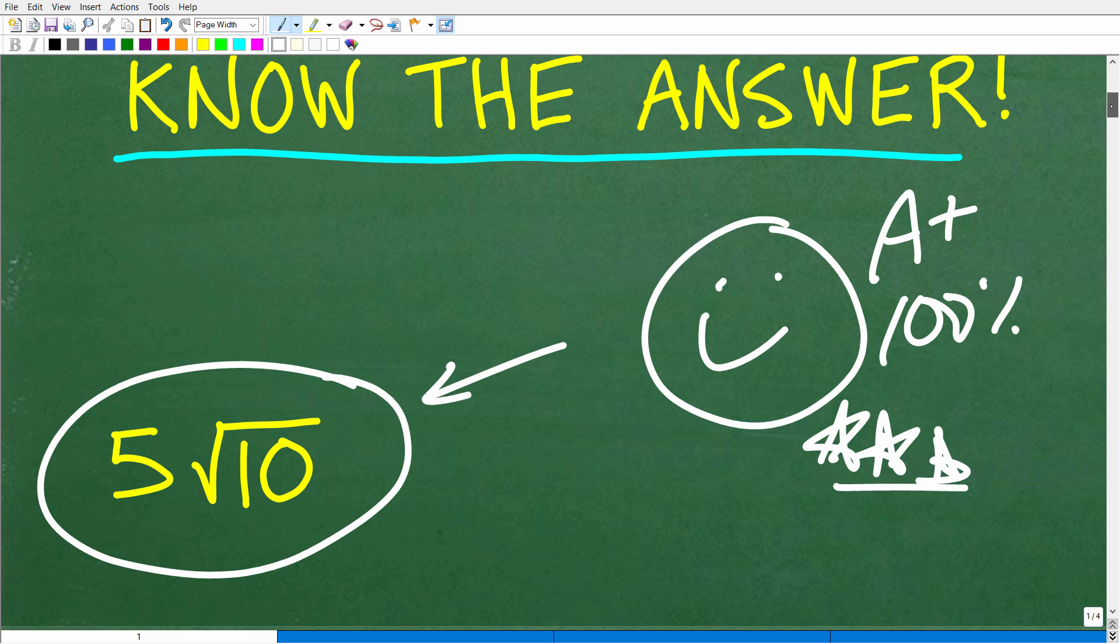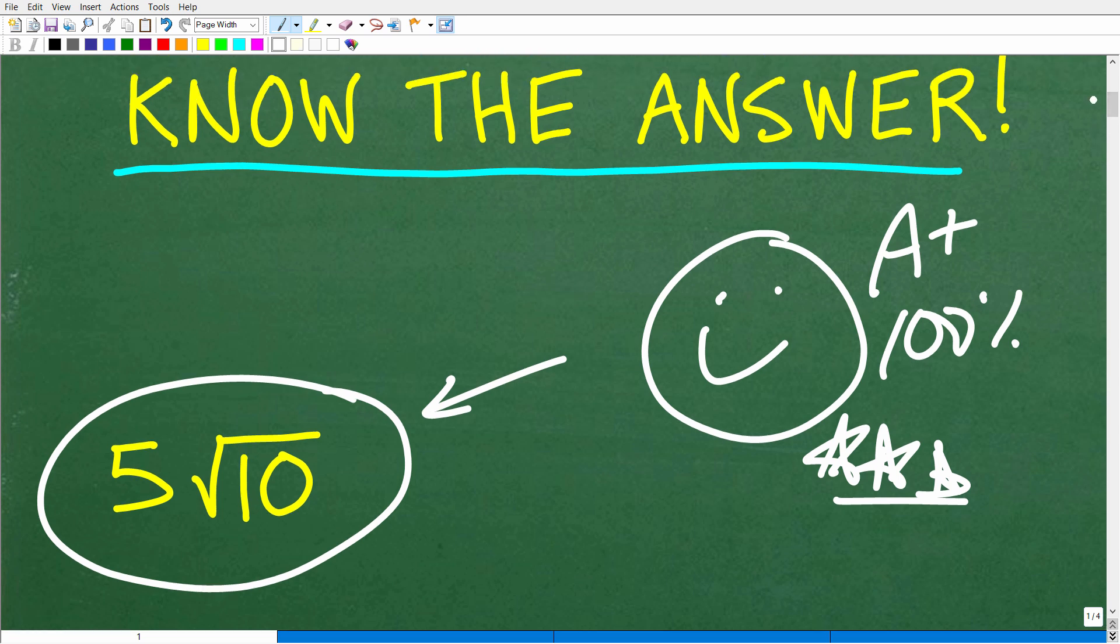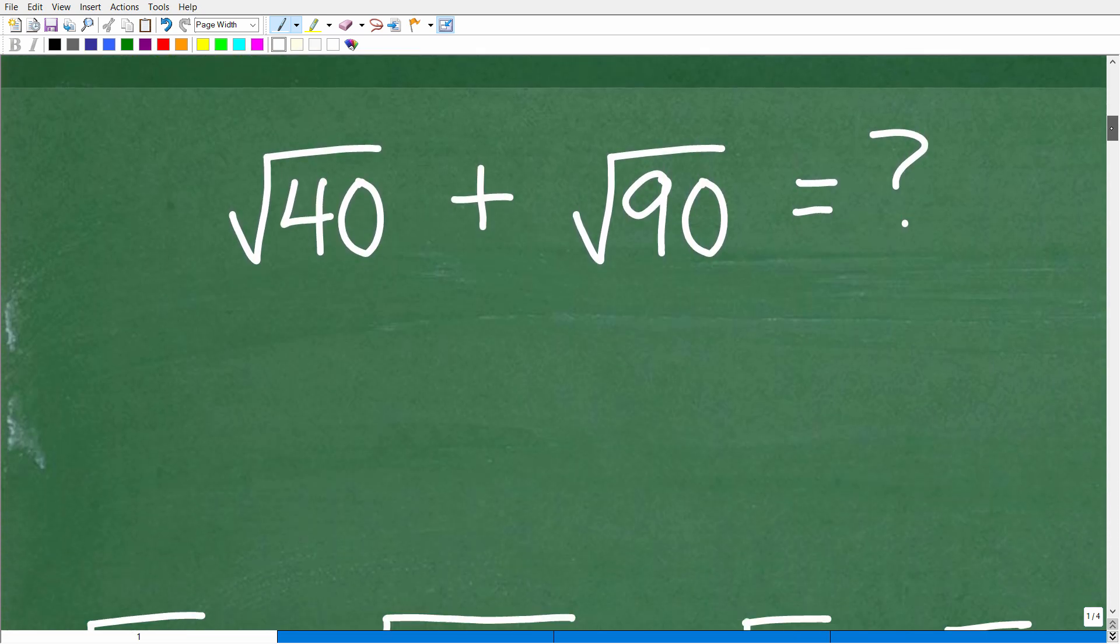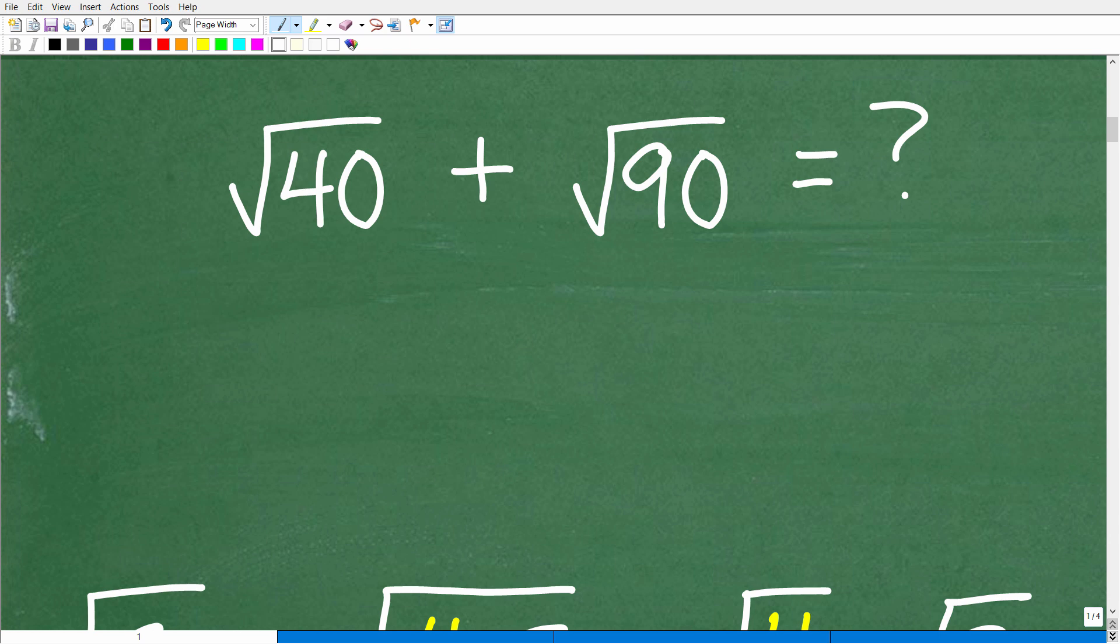Now if some of you are out there saying I'm totally confused, well, you will not be confused in a minute or two. So let's go ahead and get right to the solution. And first of all, we need to discuss some basic properties about square roots. We have the square root of 40 plus the square root of 90.